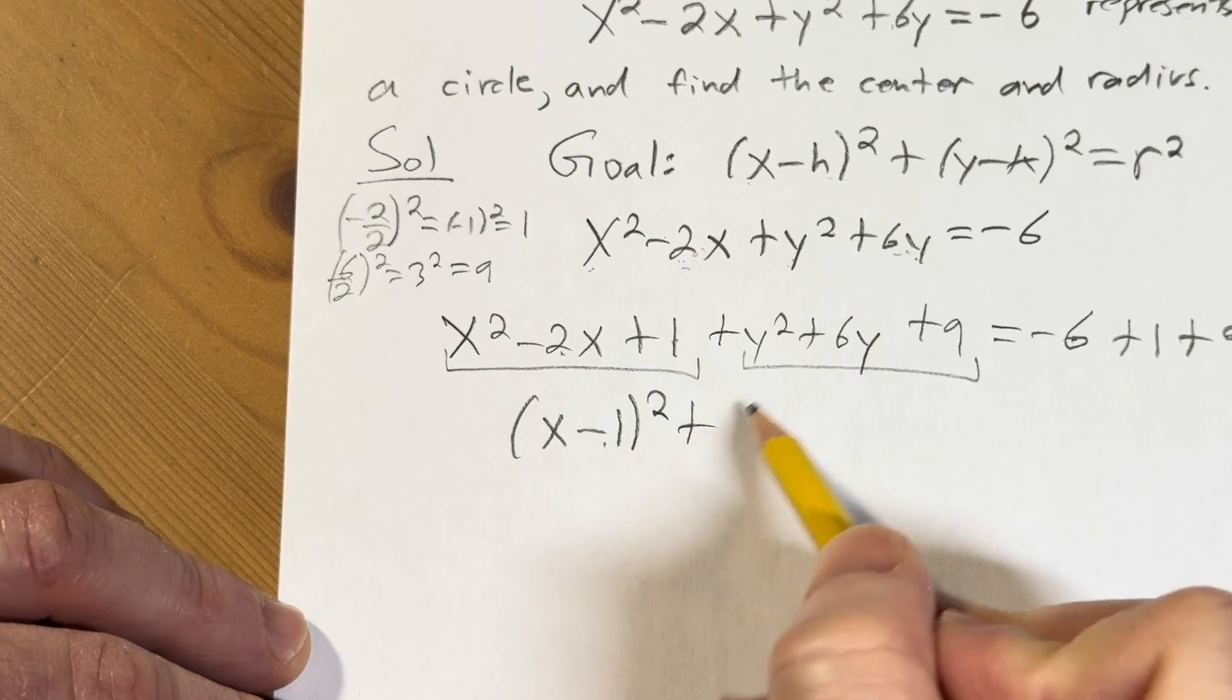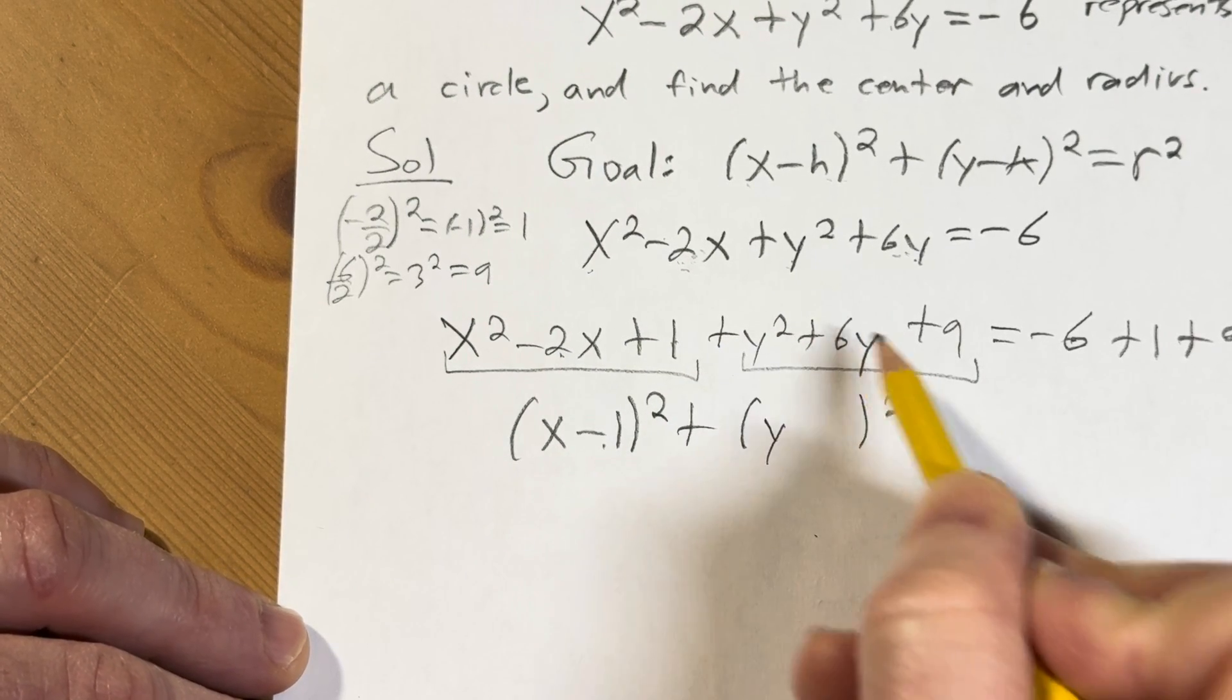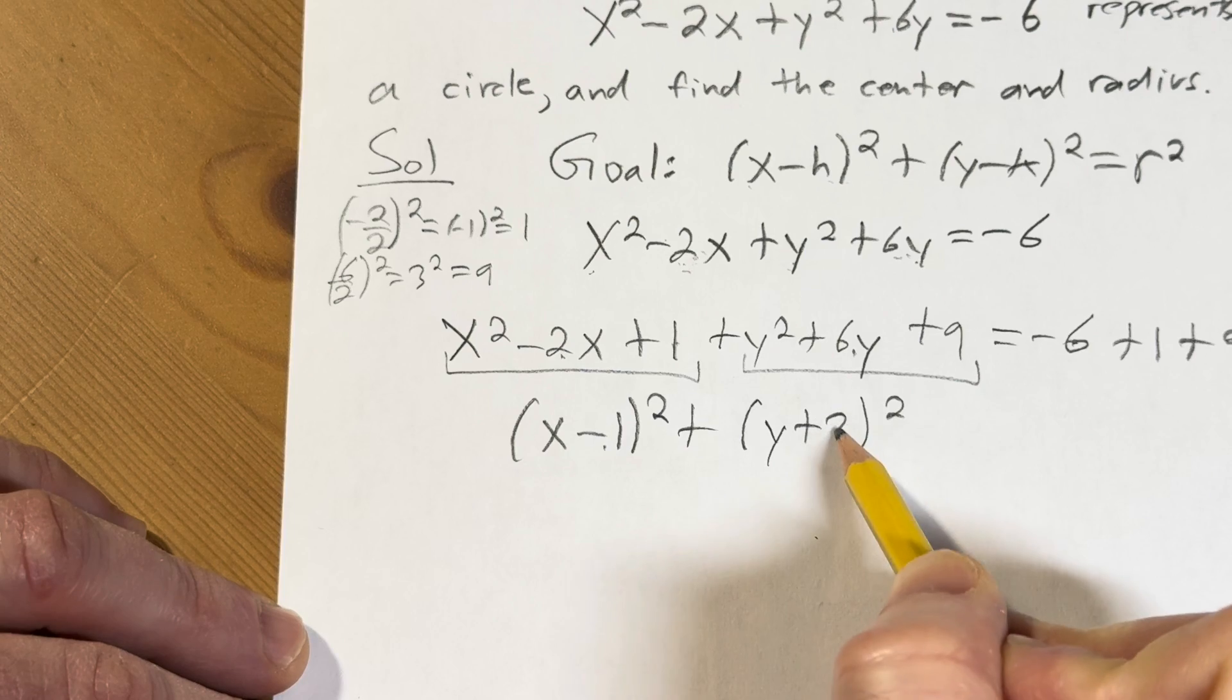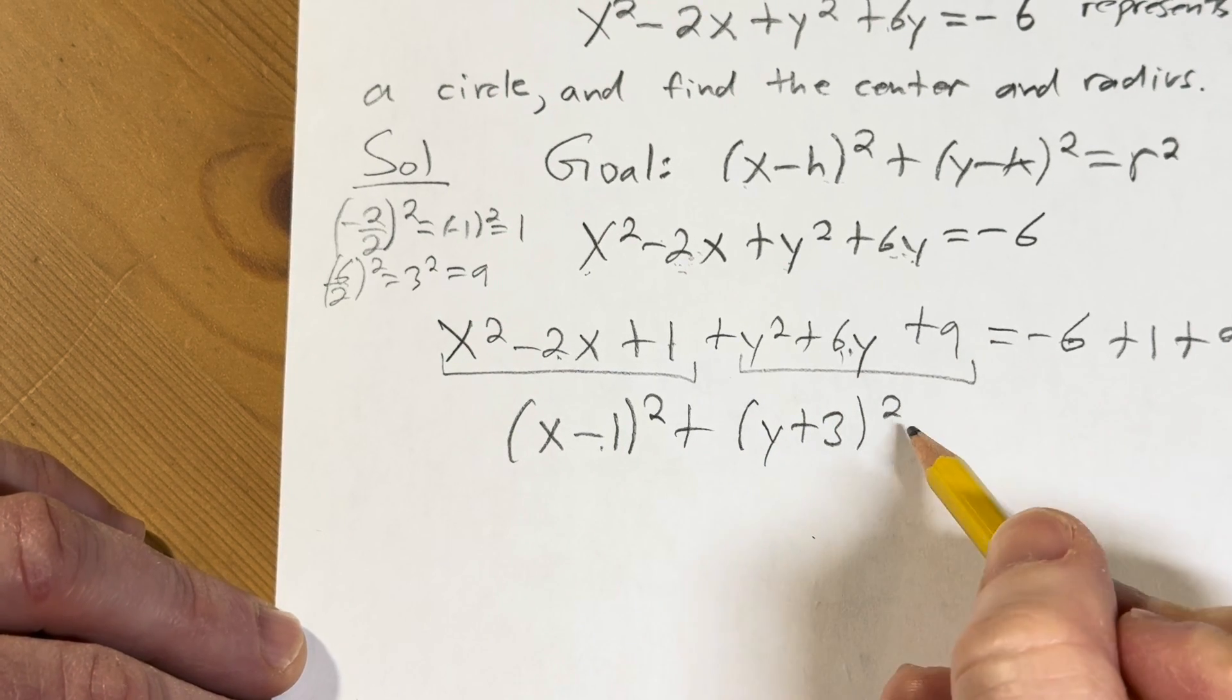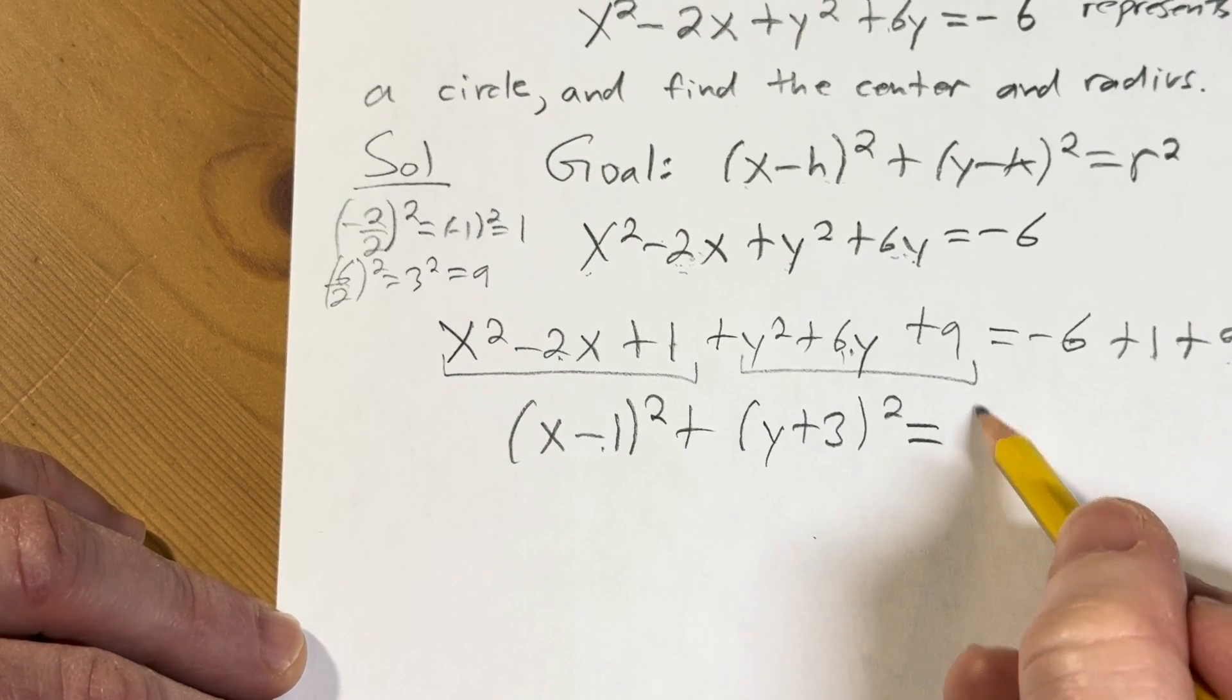How? This will become x minus 1 quantity squared. You just take this number and divide it by 2, plus take this number, divide it by 2. This is going to be 4.